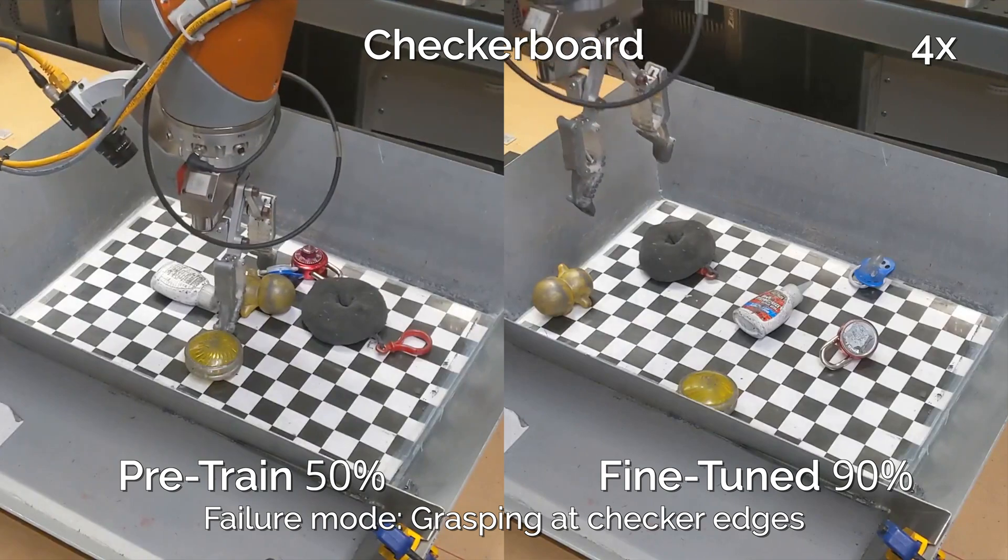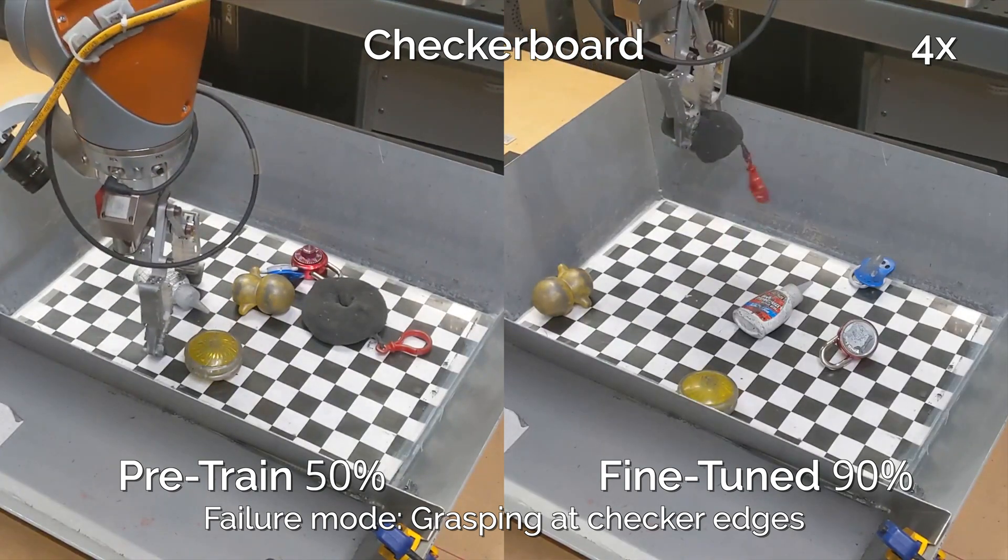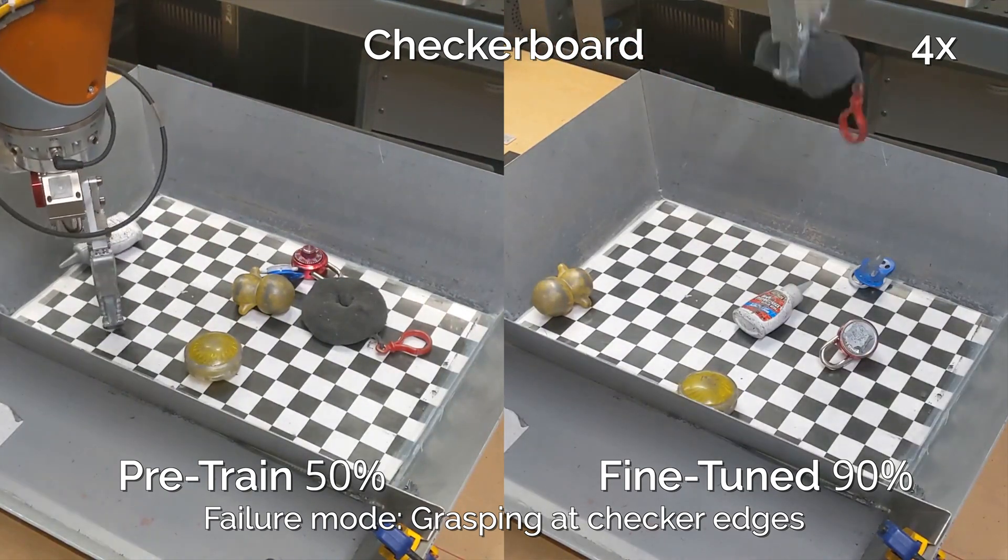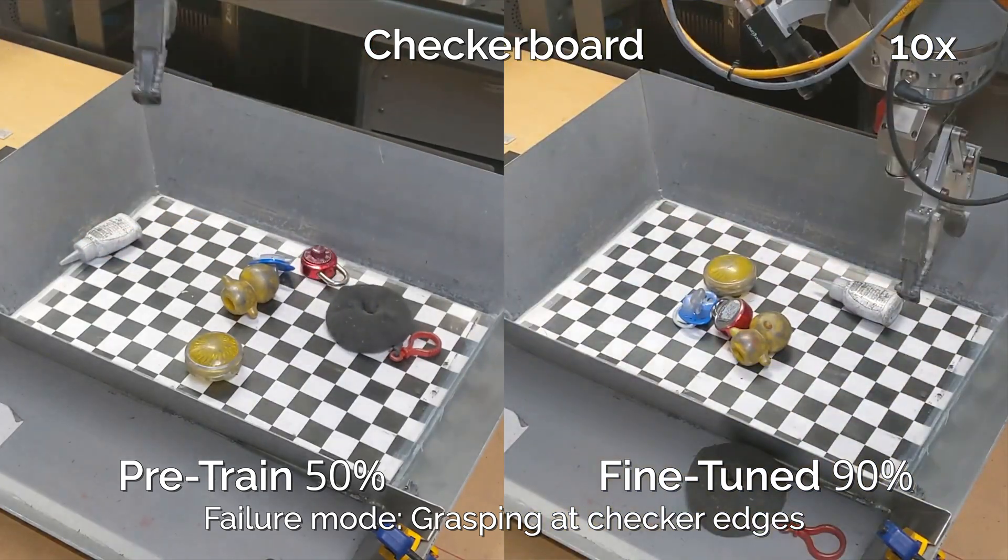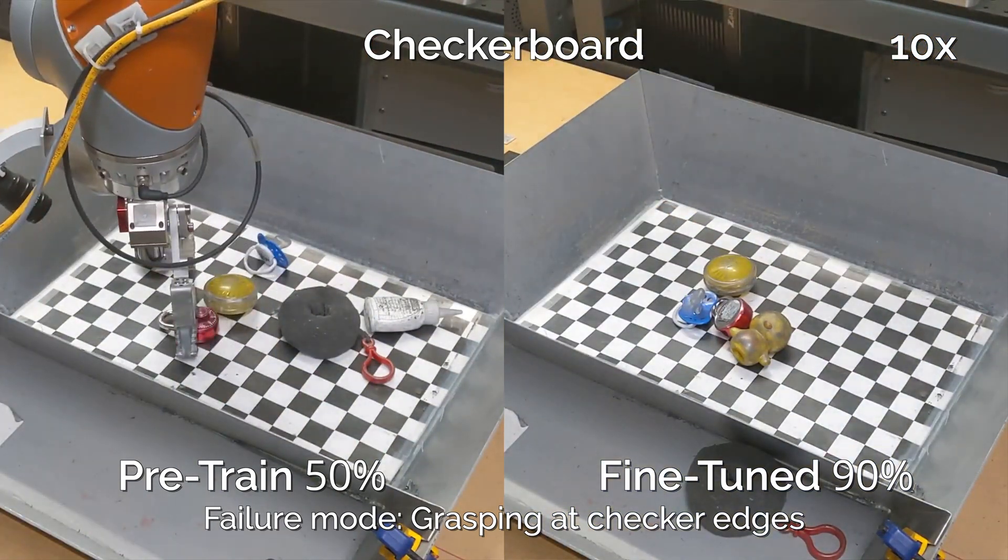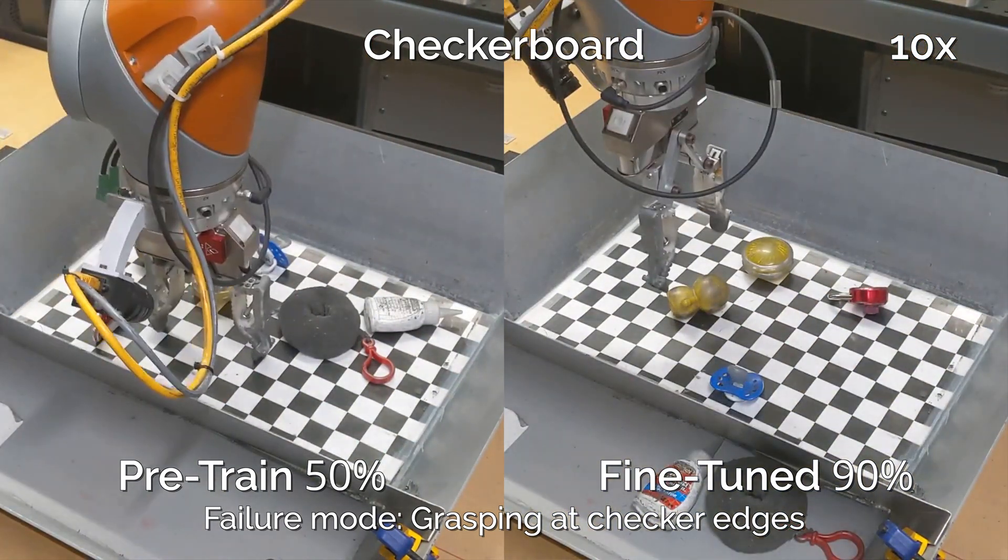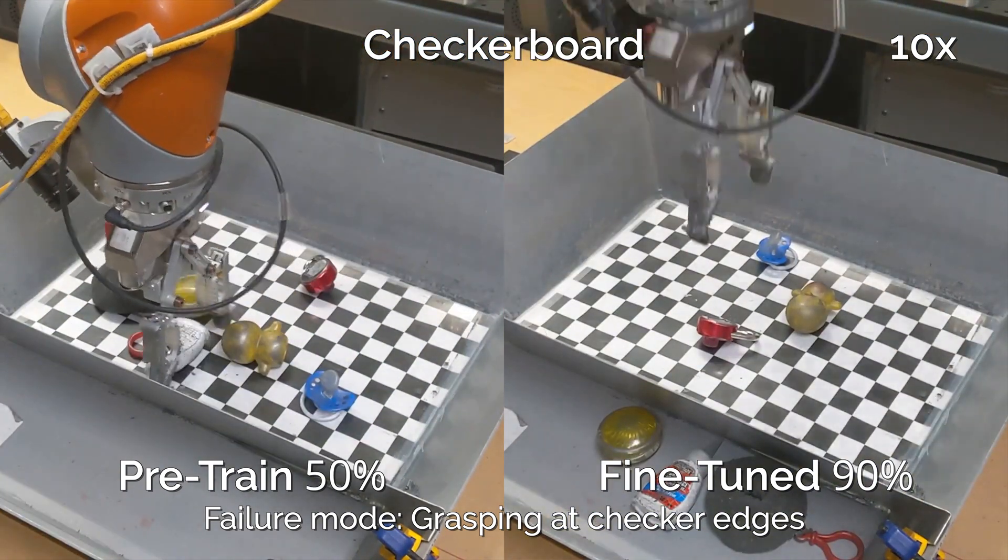In this next experiment, we replace the drab gray background of the workspace with an exciting checkerboard pattern. The untuned policy on the left consistently grasps at checkerboard edges rather than objects, a failure mode which our fine-tuning procedure learns to avoid.